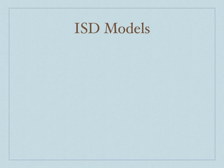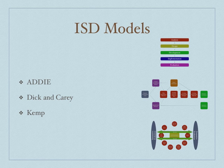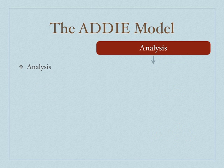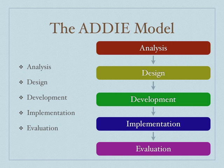When we start talking about ISD models, we're basically talking about three different ones: the ADDIE model, the Dick and Carey model, and the Kemp model. Now let's start with the ADDIE model. The ADDIE model consists of five different phases: analysis, design, development, implementation, and evaluation. That's where you get the A-D-D-I-E, ADDIE.